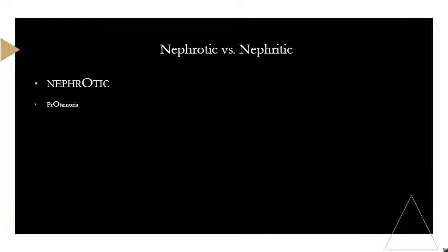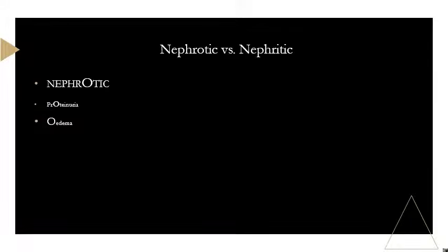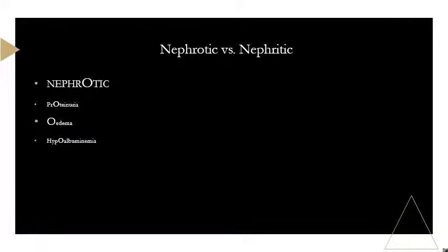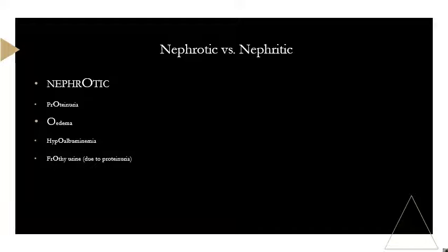The first O-word to think of is proteinuria — there's an O in it, and you're going to see that in nephrotic syndrome, not as much in nephritic. Next, edema — in England it's spelled 'oedema' with an O. Then hypoalbuminemia, another O-word you'll find on labs. And frothy urine, which is due to the proteinuria. Think about all those O's.